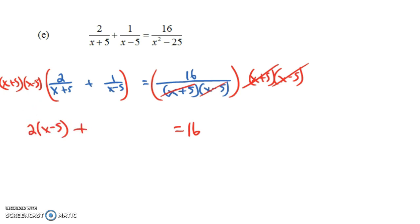And when we multiply x plus 5 times x minus 5 times the next term, the x minus 5s go away, and we're just left with 1 times x plus 5.